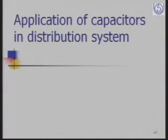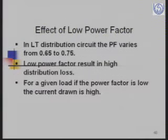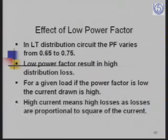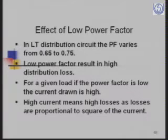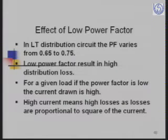The next topic is application of capacitors in the distribution system. The power factor in most LT systems varies from 0.65 to 0.75, and in agricultural areas with motor pumping loads it can go as low as 0.5. Low power factor results in high current drawn, higher I²R losses. The total power drawn includes both active kW power and reactive kVAR power; low power factor means higher kVAR drawn from the system, resulting in higher total kVA.